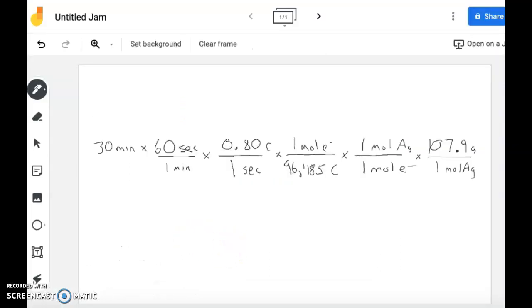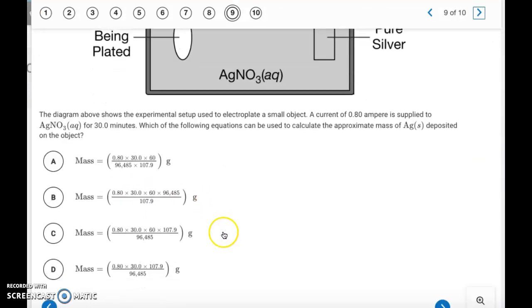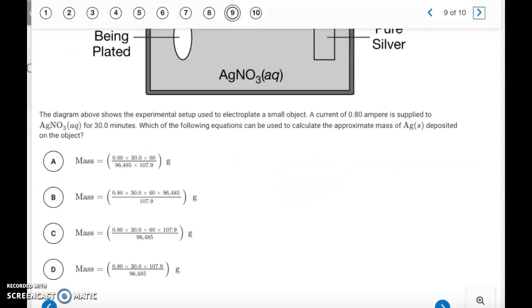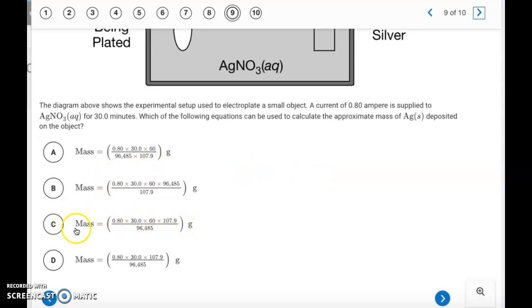So the calculation actually looks like this, where we start off with the 30 minutes of time, convert it to seconds. This 0.80 coulombs per second, that's the amperage. That's the current. This is Faraday's constant to convert it to moles of electrons. The silver is a positive one ion, so it's going to be one mole of electrons per one mole of silver. It's a one-to-one ratio. And this 107.9, that's the molar mass of silver, and that's going to convert it into grams. So we don't have to come up with the final answer. We just need to show what the process is. And our multiple choice possibilities, it doesn't show any of the units. It just shows what we do with the numbers to get there. So looking back at this solution, it's going to be 30 times 60 times 0.8 times 107.9, and we're only dividing by 96,485. So that's going to be letter C is the correct answer.